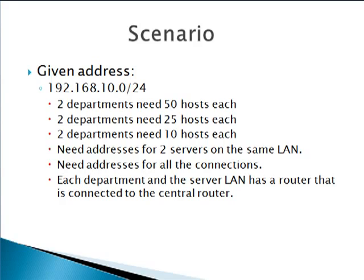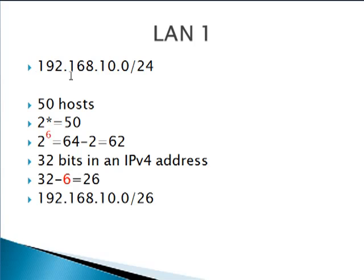Let's start off with LAN 1. Since we need to start with the largest, LAN 1 is the largest. We start with 192.168.10.0 and we need 50 hosts. We find that by asking: 2 to what power equals 50? Well, 2 to the 6th is 64. You subtract 2 for the network and the broadcast, leaving 62 usable host addresses — we only need 50, so we've got plenty. There are 32 bits in an IPv4 address, so 32 minus 6 gives you 26. That is your subnet mask for this LAN: 192.168.10.0/26.